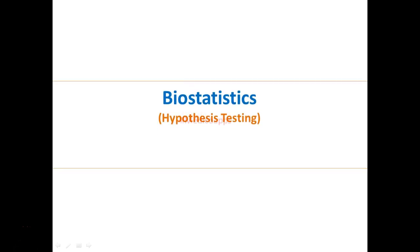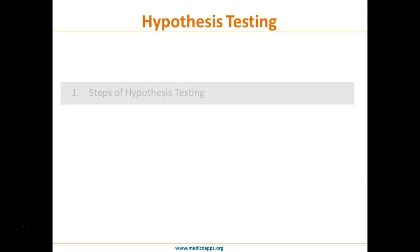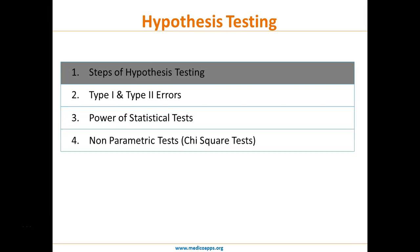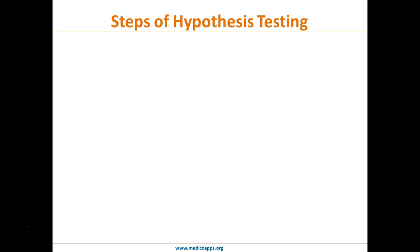In today's master class we are going to learn about hypothesis testing. Hypothesis testing is divided into four modules: the first module on steps of hypothesis testing, the second on types of errors encountered while testing, the third on the power of a statistical test, and finally we will look at some non-parametric tests, especially the chi-square test.